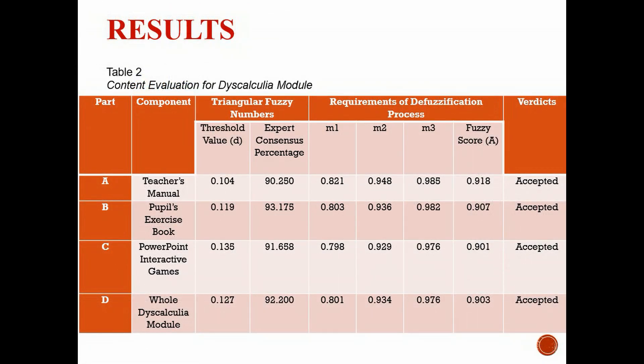Table 2 shows the content evaluation for the whole dyscalculia module with 4 different parts. Based on the findings, all 4 parts obtained the threshold value D below 0.2. The experts' consensus percentages were above 75%. Besides, the fuzzy score A for these 4 parts were above 0.5. On the whole, teachers' manual, pupils' exercise book, PowerPoint games, and the whole dyscalculia module were accepted by all the experts.